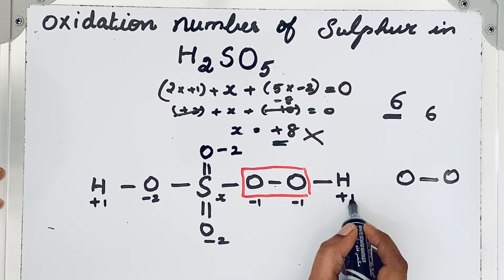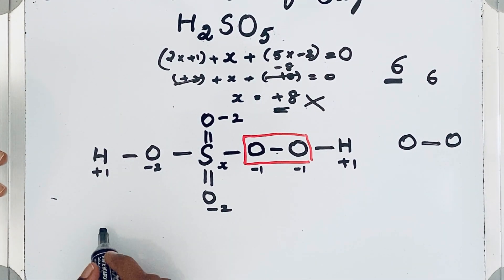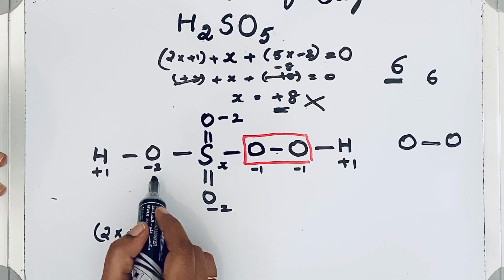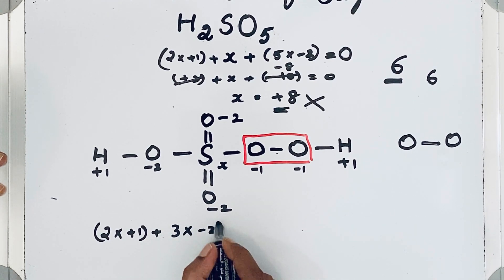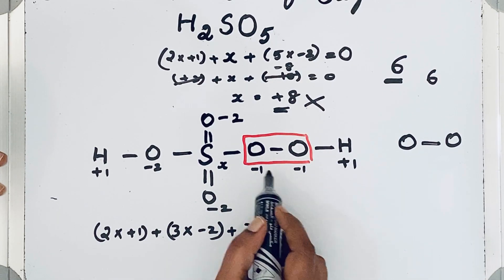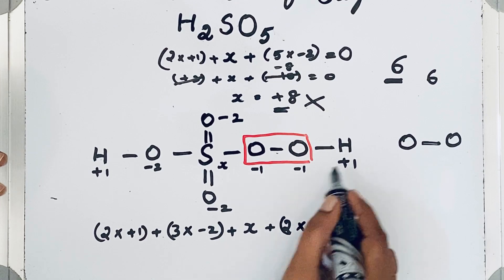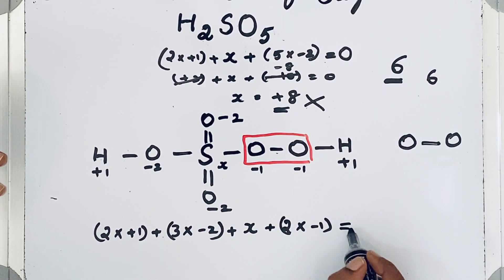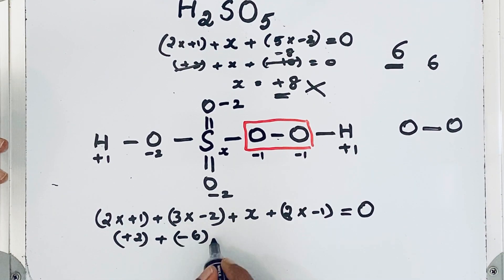I think now we can write all the things. Hydrogen, there are 2 hydrogen atoms here, so 2 multiply plus 1. Plus, how many oxygen atoms with minus 2 oxidation numbers are there? 3 oxygen atoms, so 3 multiply by minus 2. Plus x, sulfur, let us keep it like x. Plus, how many oxygen atoms with minus 1 is there? Only 2, so 2 multiply by minus 1. Algebraic sum should be 0, isn't it? So let us solve. Plus 2, then this is minus 6.